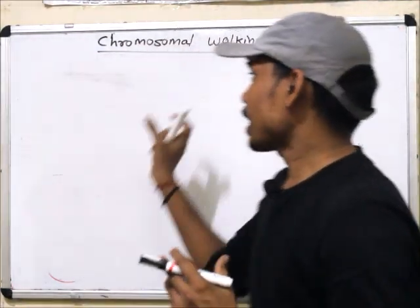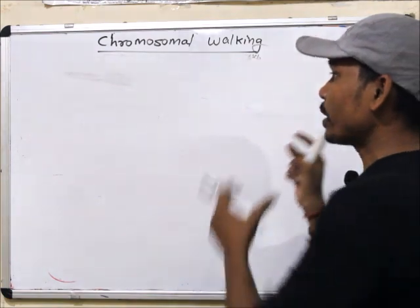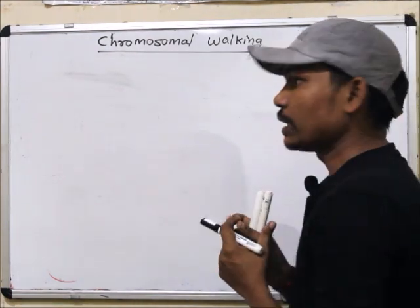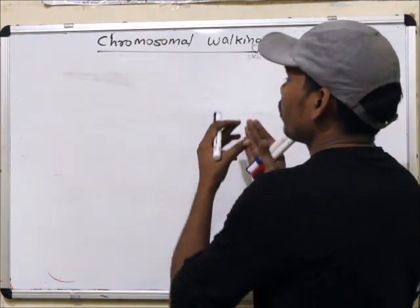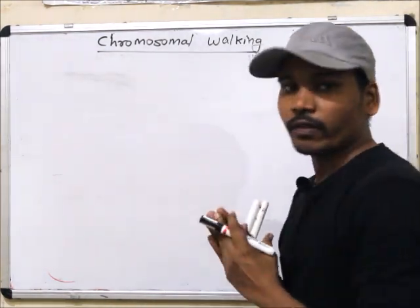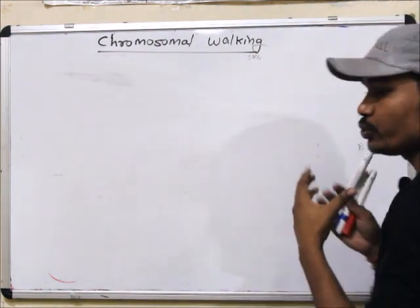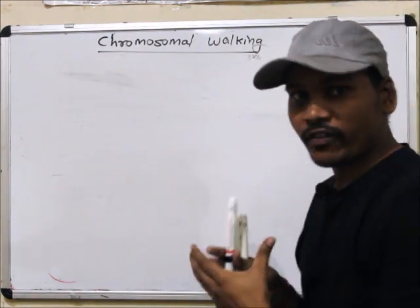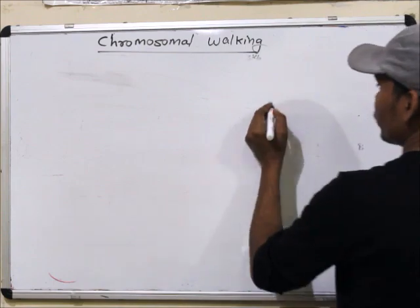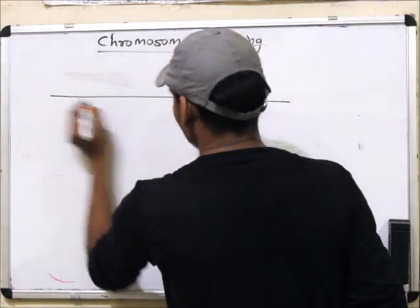Hi friends, today I will describe chromosomal walking. What is the meaning of chromosomal walking and why it is called chromosomal walking? Chromosomal walking is a technique to identify and map large regions of chromosomes.